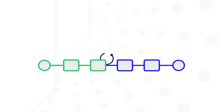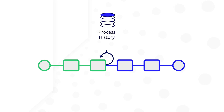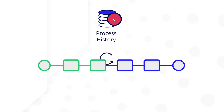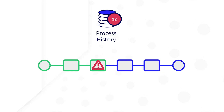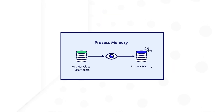Comparatively, looping on a node using MNI, or multi-node instance, can have a large impact on process memory as each instance of the node saves in the process history. Multiply that by the data being generated, and you can have a major source for an inefficient process design. We recommend that variables used in an MNI are marked as hidden to reduce the impact on process memory.